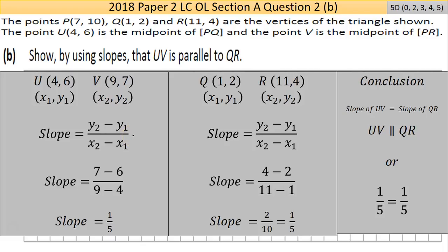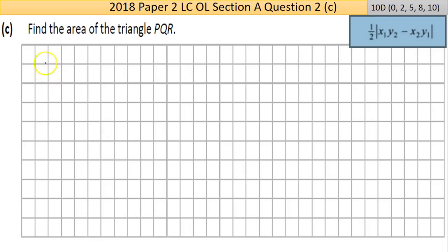Now part C says find the area of the triangle PQR. It's not a right angle triangle so we can't use a half base by height and find distances. We couldn't use a half AB sine C—we'd have to find an angle. The most appropriate formula here would be the formula for coordinate geometry, the area of the triangle.